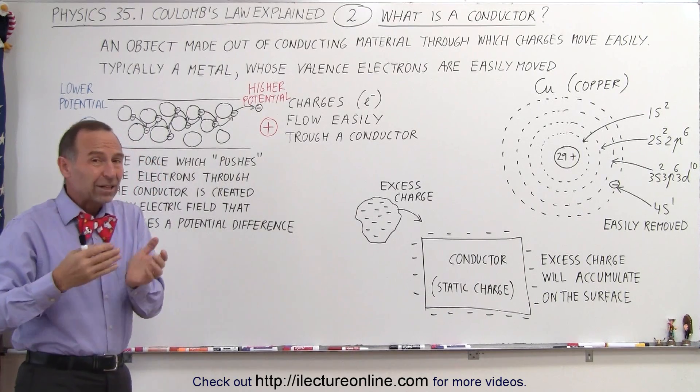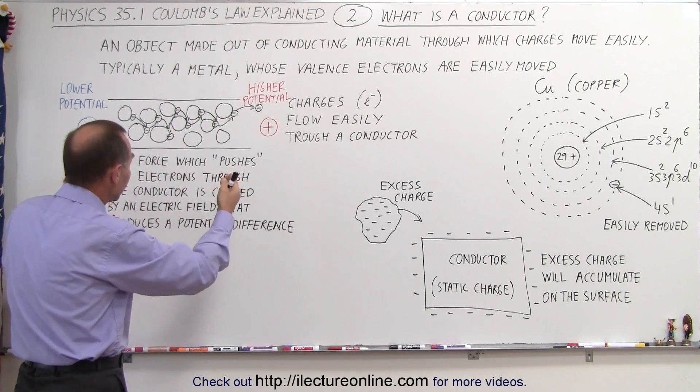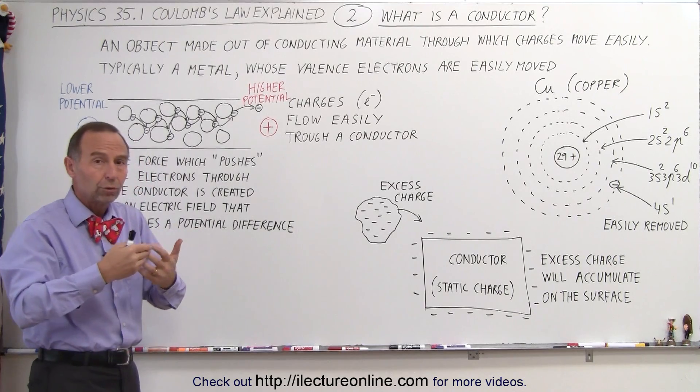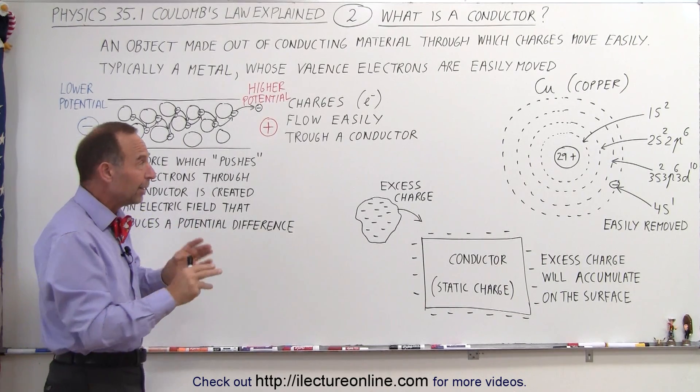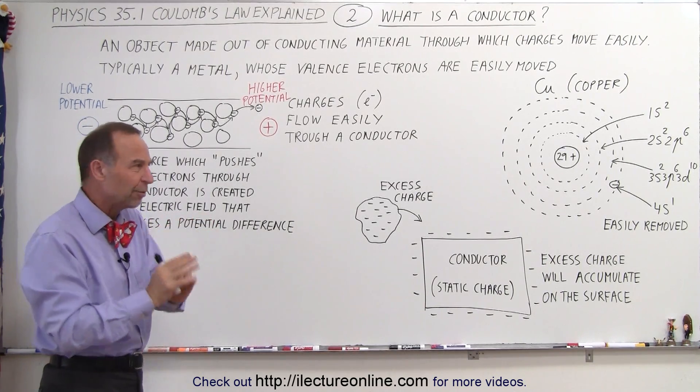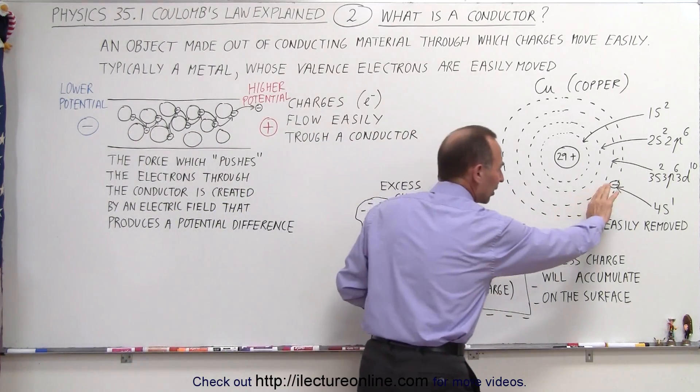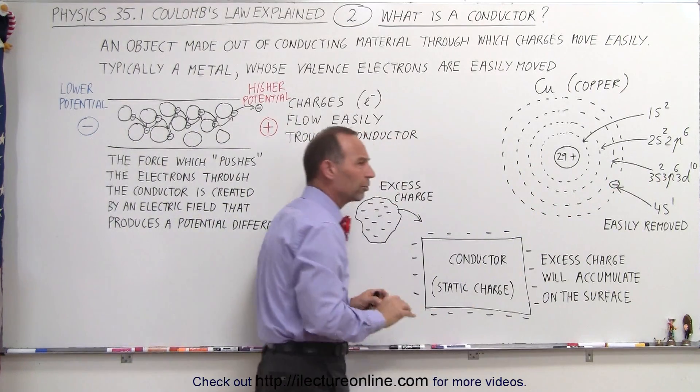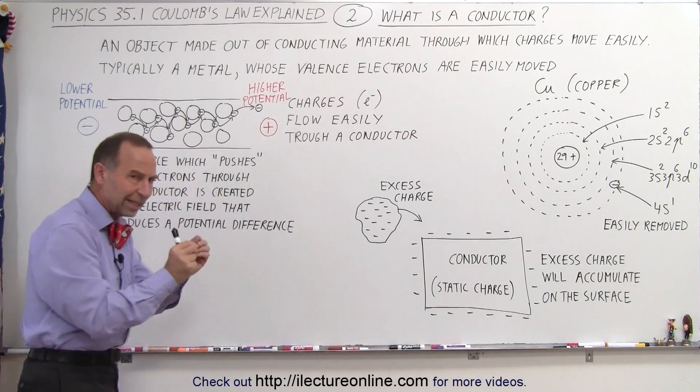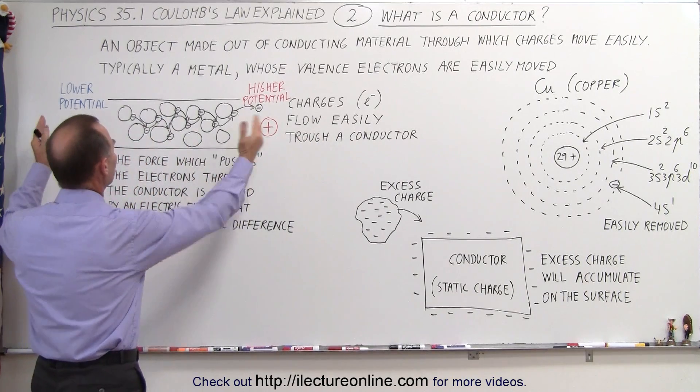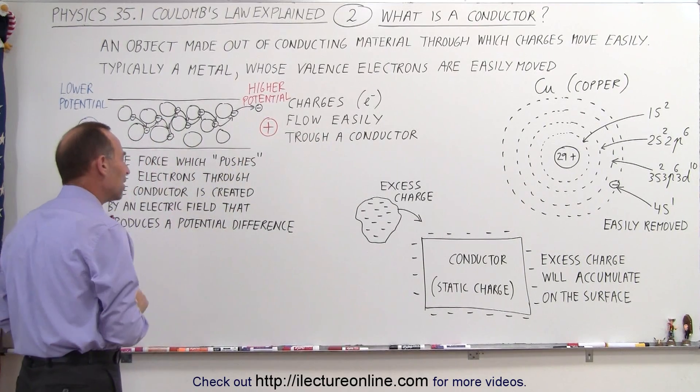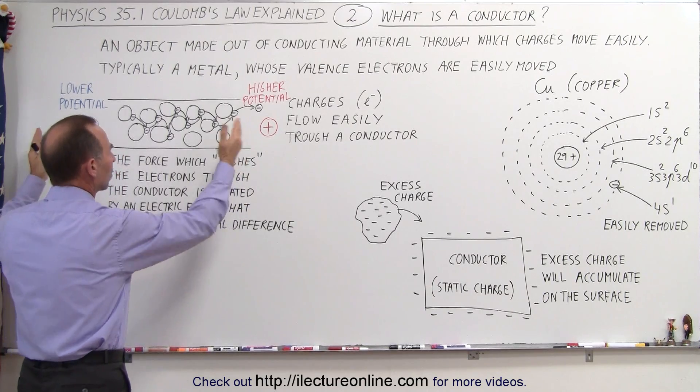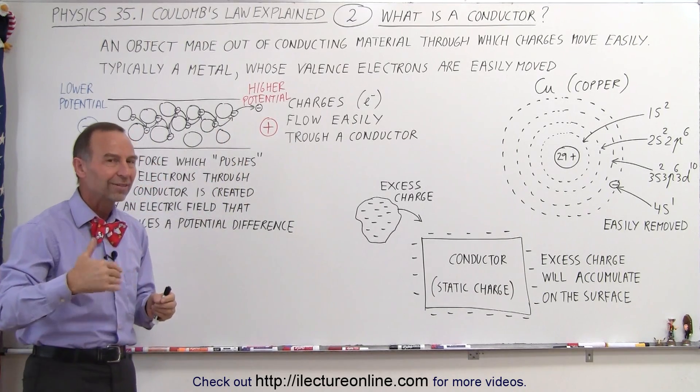Now, what makes electrons flow through a conductor? Well, they don't freely just flow through a conductor on their own. You need to push them through. They need a little bit of a push so that you can push these electrons off those outer orbitals. That push is created by an electric field that produces a potential difference.